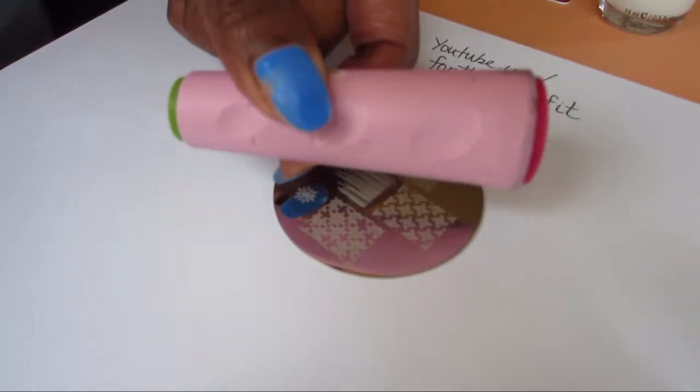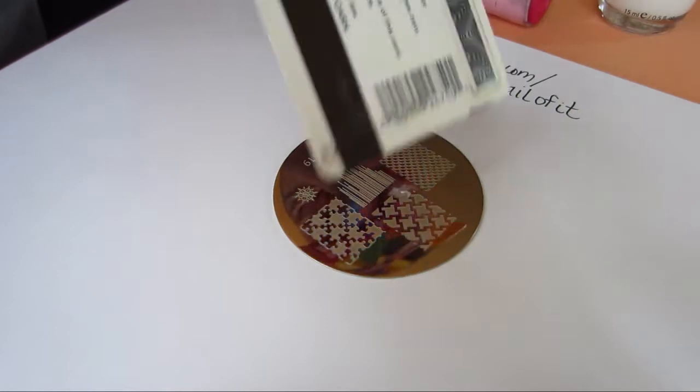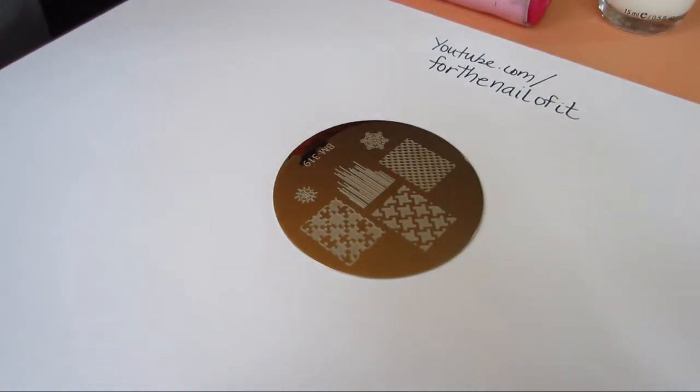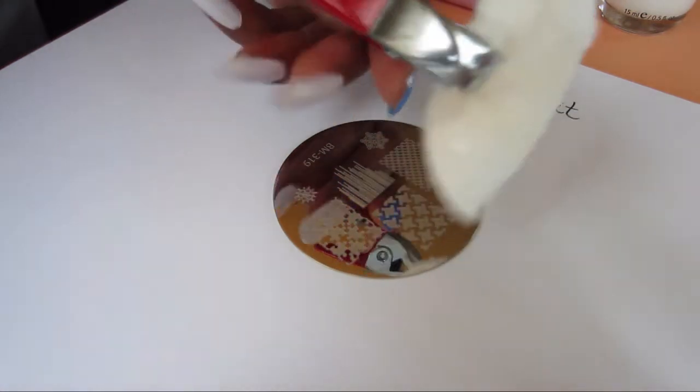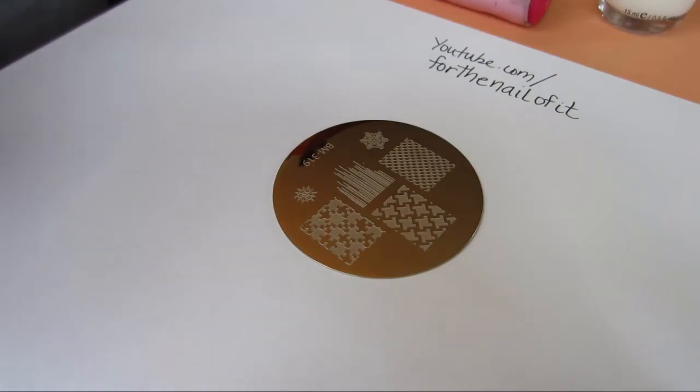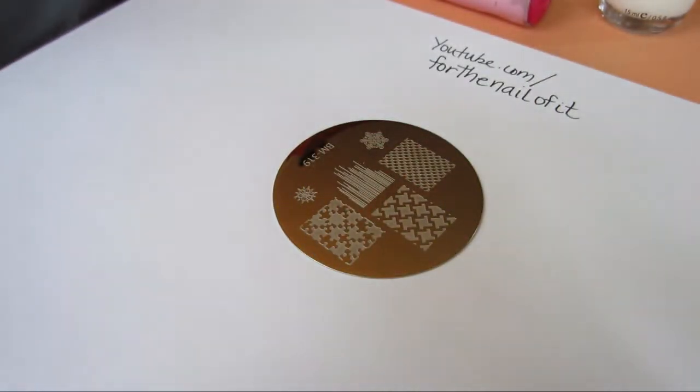When I do my stamping I like to have my Conad double stamper. I use a gift card or something with the equivalent plastic thickness to do my scraping. I have a little cotton round here on one of these little clippies. I got this at the Dollar Tree and I also keep a little dappin dish of acetone. I just got that at Sally's.